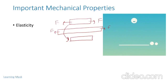Observe the image — you can see a ball and an elastic rod. When the ball falls on the rod, the rod first deforms, and when the ball goes away from the rod, that is when the load is removed, the rod comes back to its original position. So this rod is elastic, and the property by which it returns back is known as elasticity. The next property is plasticity.